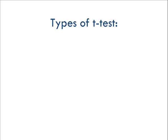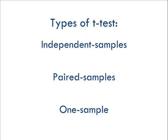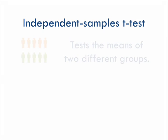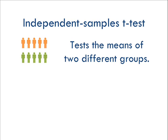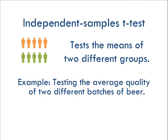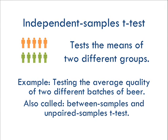There are three main types of t-tests: the independent samples, the paired samples, and the one-sample test. The most common is the independent samples t-test, which is when you have two different groups you want to compare. Our cholesterol experiment is an example of this. T-tests were first developed in the early 1900s to check for differences in quality in batches of Guinness beer — also an independent samples t-test. They're also called between-samples or unpaired-samples t-tests, but they all mean the same thing.